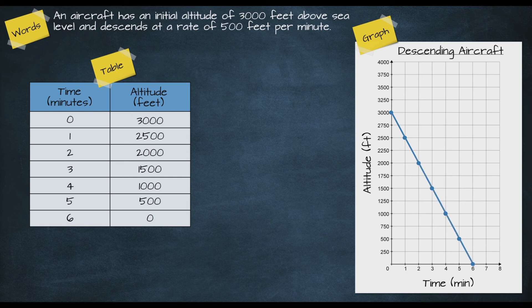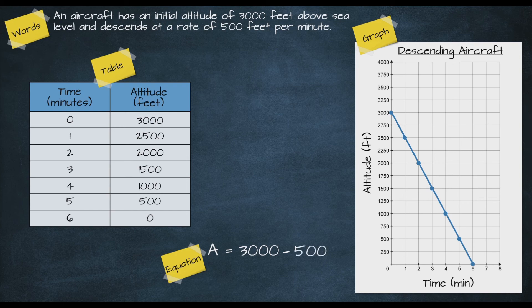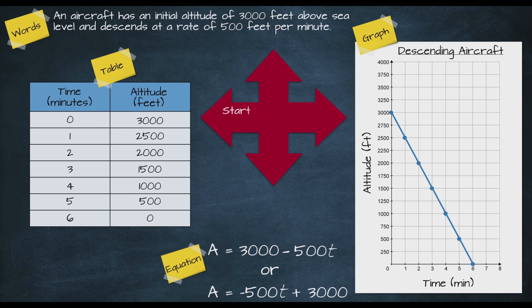Finally, let's look at our equation model for the descent. We use A for altitude with an initial altitude of 3000 feet, but this time altitude is decreasing, so we subtract: A = 3000 − 500t. We can also write this as A = −500t + 3000. As with the climbing aircraft, our two key values show up in each of the four representations: a start value of 3000 feet and a rate of negative 500 feet per minute — negative because the aircraft is descending.